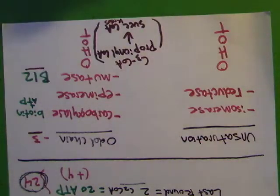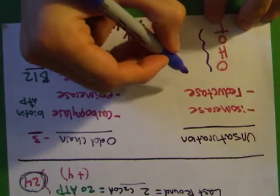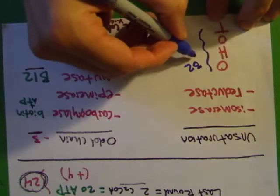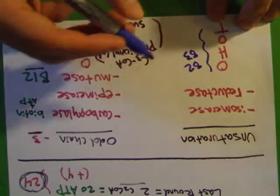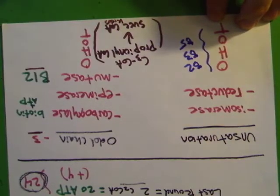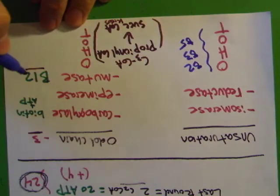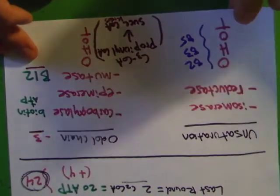For the whole beta oxidation process: FAD means riboflavin (B2) is involved, NADH means niacin (B3), and CoA means pantothenate (B5). So for odd-chain fatty acid oxidation specifically, you need biotin, B12, plus B2, B3, and B5.